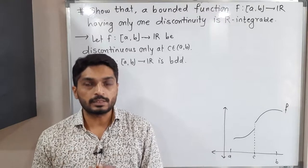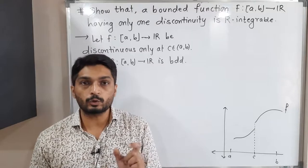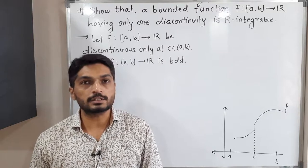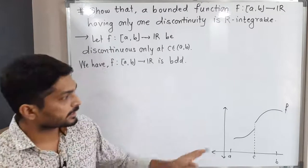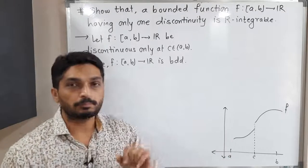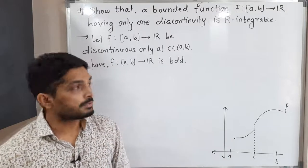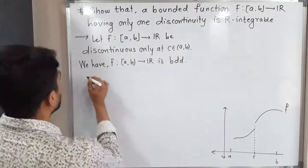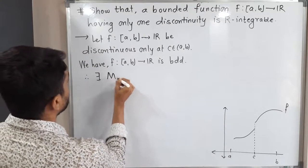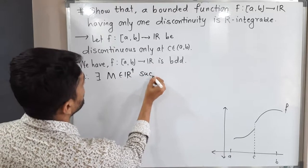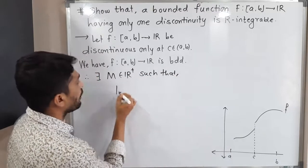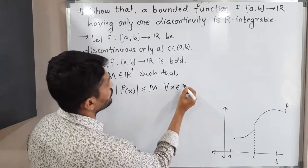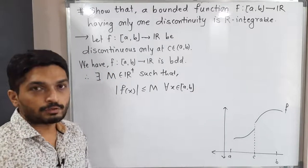Let us discuss this result. We have a function f defined on the closed interval [a, b] which is discontinuous only at one point. We had to prove that this function is Riemann integrable. The function f is discontinuous at point c belonging to the open interval (a, b). The function is also a bounded function. Therefore by definition, there exists some positive real number M such that |f(x)| ≤ M for all x in [a, b].